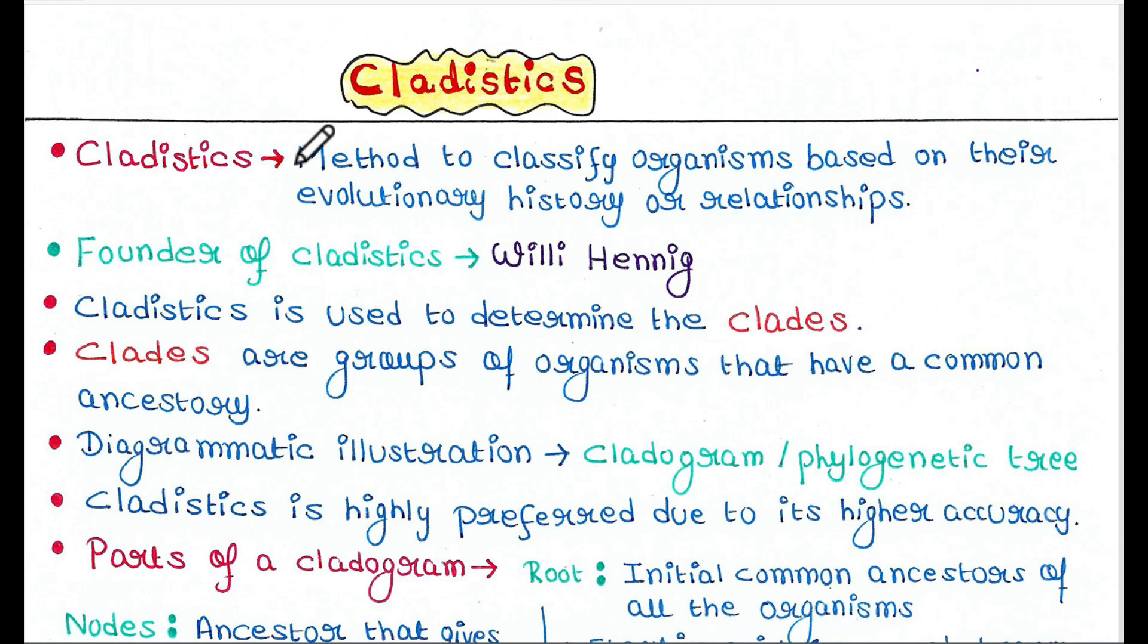So what is cladistics? It is basically a method to classify organisms based on their evolutionary history or relationships. Suppose you have a new organism X. You want to classify it. So what will you do? Check its evolutionary history first, like with which organism it has similarity.